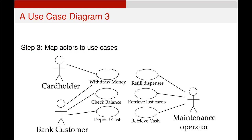Beyond that, we map which actors have access to which use cases. Obviously, we don't want a cardholder to be able to retrieve lost cards. Notice that while the actors are separate, this is why we don't give them specific names, because one person could be multiple actors. For example, the maintenance operator may also be a cardholder. But rather than track that John, a specific maintenance operator, happens to also have a card with this bank, we keep the actors general.